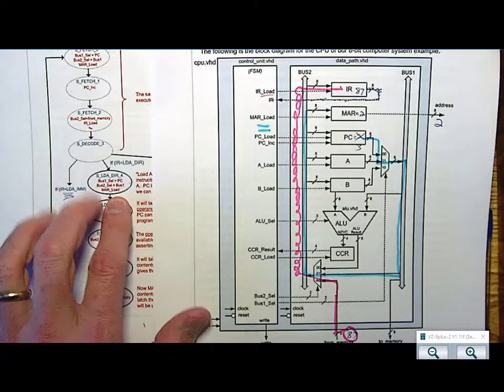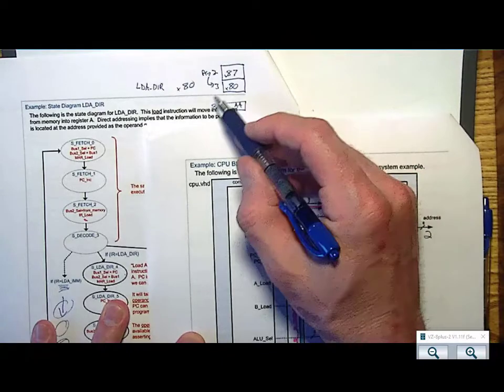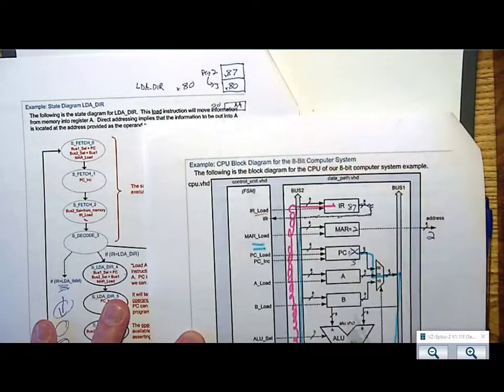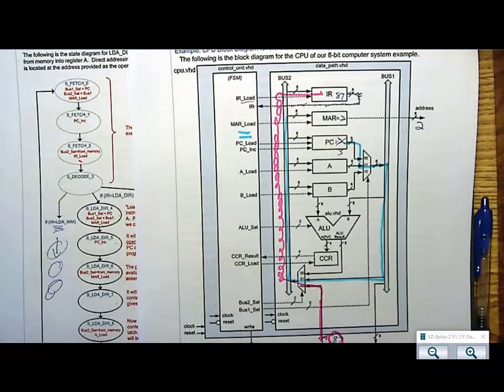Who holds the address of the operand? If you look at our program counter or memory model, it's the program counter. It is tracking where I'm grabbing information out of the program memory.